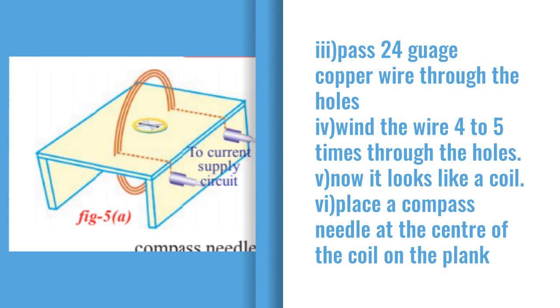Pass 24 gauge copper wire through the holes. See that red color circular figure - that is copper wire, 24 gauge copper wire, passing through those holes.